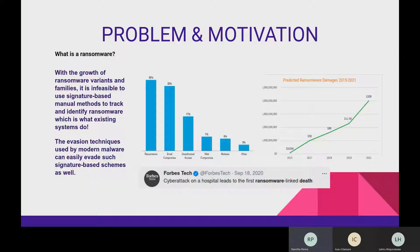However, with the growth of new ransomware variants, it is infeasible to use such signature-based methods to track ransomware. Therefore, within our research we explore that problem. In our project, we focus to overcome those limitations in the existing system and develop a system which is capable of keeping up with the ransomware growth.